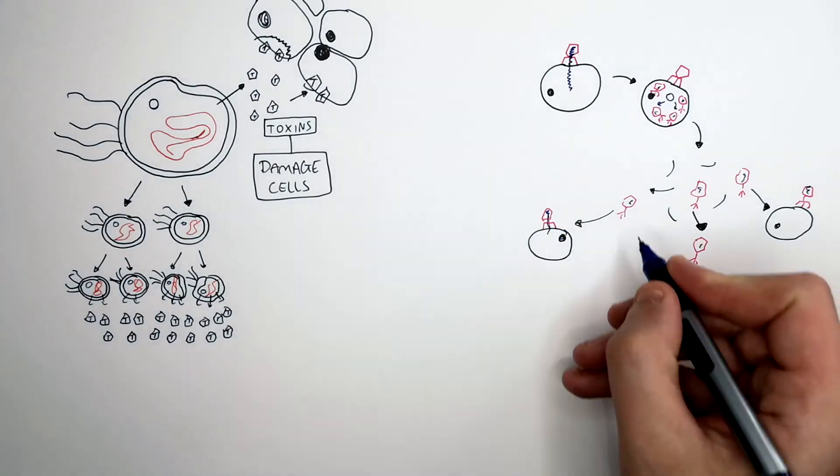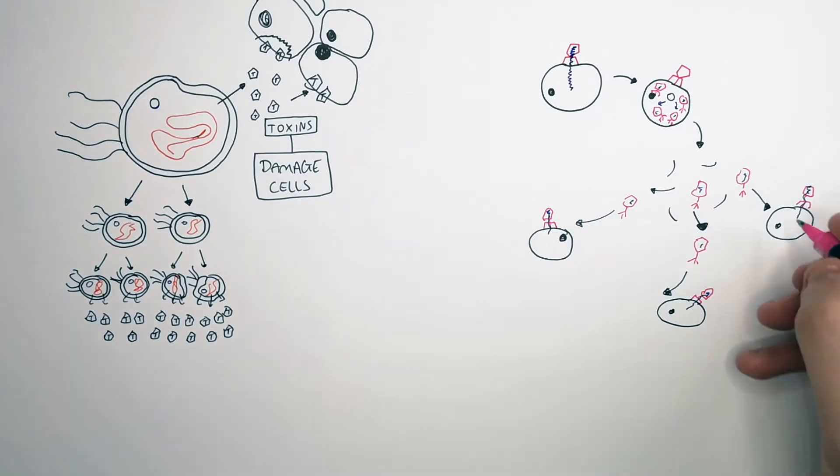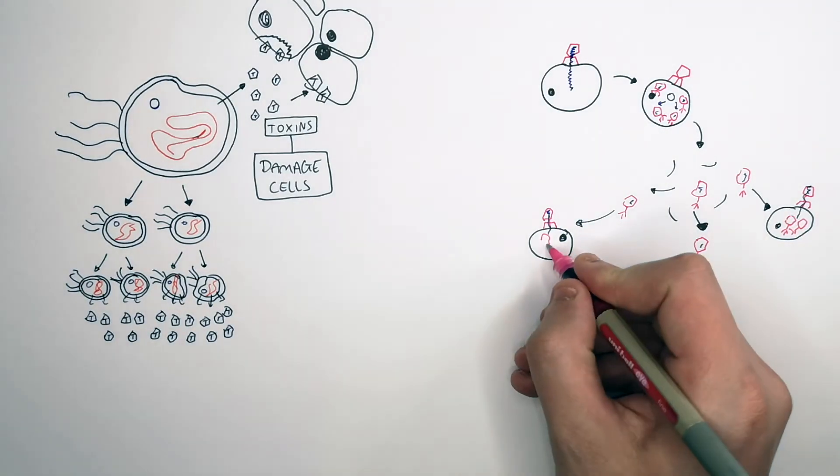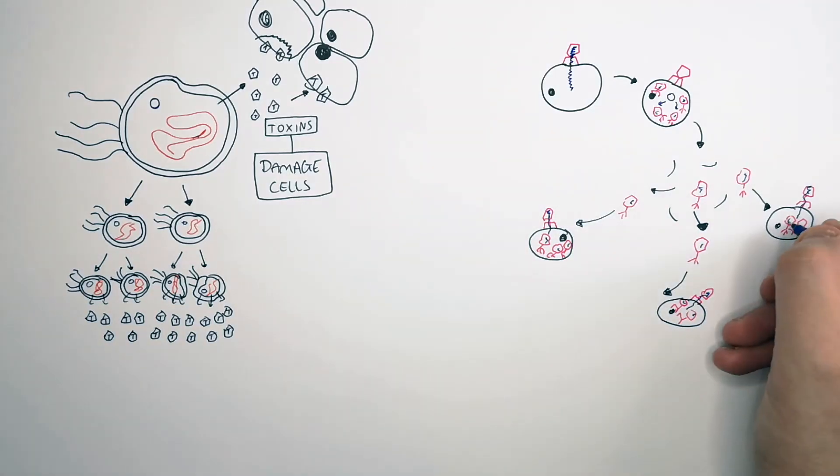Inject its genetic material into that cell and millions more viruses are going to be produced in the cells. And those cells are going to undergo lysis. They're going to split and rupture, releasing more viruses into your blood.